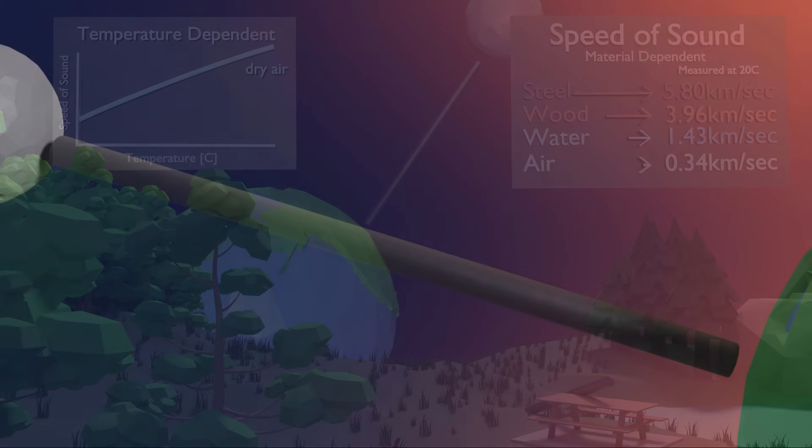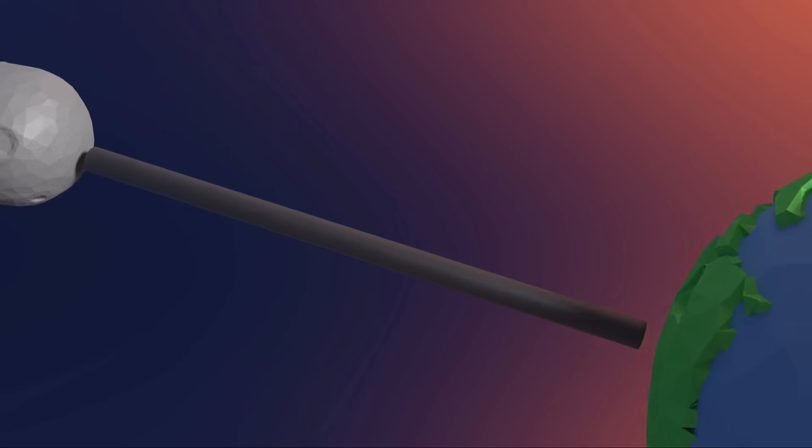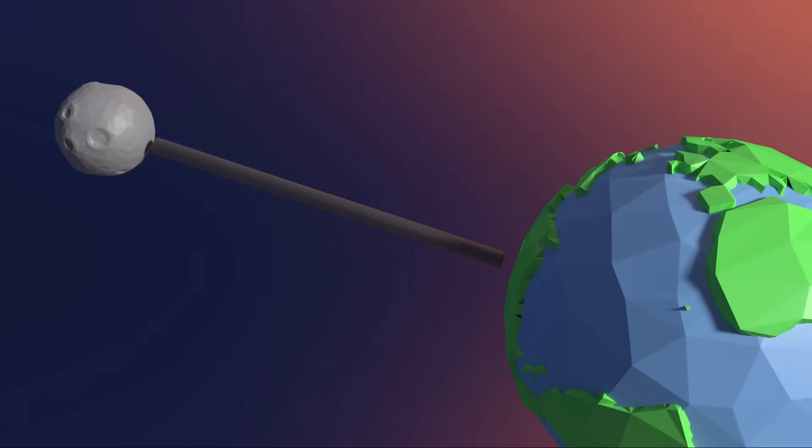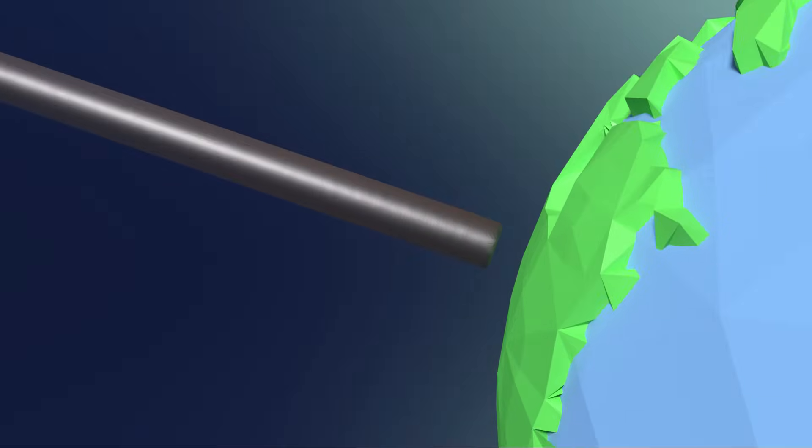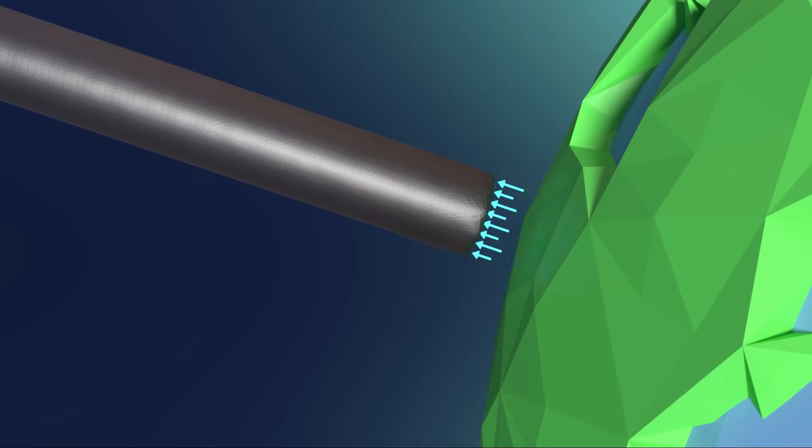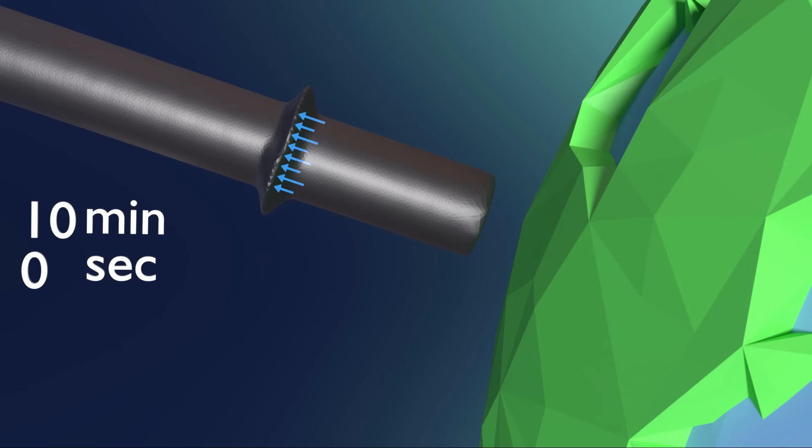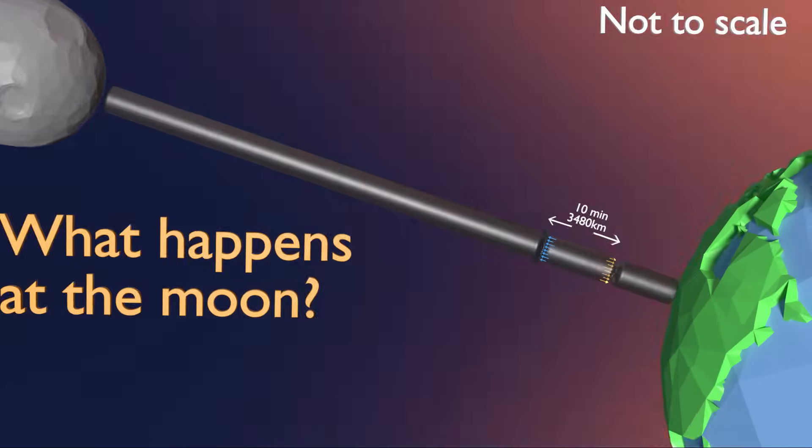Now let's get back to the thought experiment. Consider what will happen if we move the steel bar differently. On earth, let's move the bar up, and then after 10 minutes we move the bar back down. What will happen on the moon?